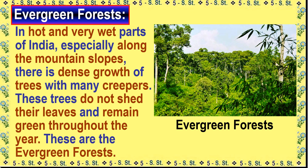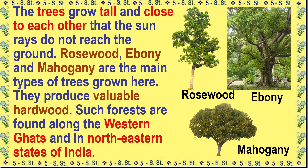In hot and very wet parts of India, especially along the mountain slopes, there is dense growth of trees with many creepers. These trees do not shed their leaves and remain green throughout the year — these are the evergreen forests. The trees grow so tall and close to each other that the sun rays do not reach the ground. Rosewood, Ebony and Mahogany are the main types of trees grown here, and they produce valuable hardwood. Such forests are found along the Western Ghats and in the northeastern states of India.